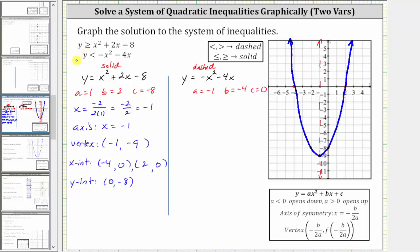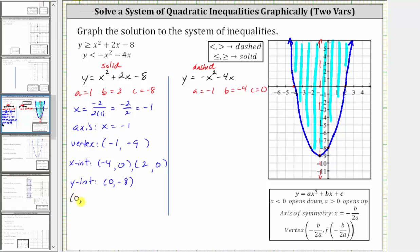Now we shade based upon the original inequality. Because we have y is greater than or equal to, we shade above the vertex — inside the parabola. The solution to the first quadratic inequality is any point in this region, including points on the solid graph. To verify, we test the origin zero comma zero: substituting gives zero is greater than or equal to zero squared plus two times zero minus eight, which simplifies to zero is greater than or equal to negative eight — true. We shaded the correct region.